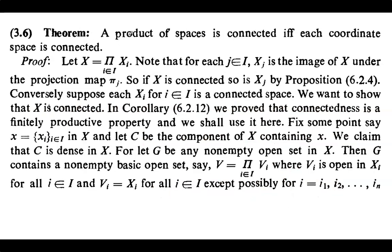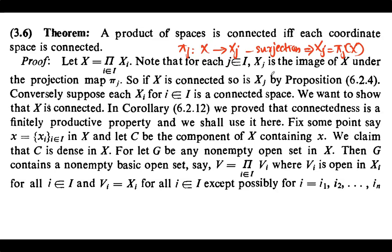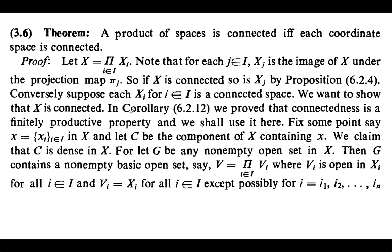Next theorem: A product of spaces is connected if and only if each coordinate space is connected. For the proof, label the product space as X. The projection function πj is defined from X to Xj and is a surjection, so Xj can be regarded as the image of X under πj. Since connectedness is preserved under continuous functions, whenever X is connected its image πj(X) = Xj will be connected. Thus if the product space is connected, so is each coordinate space.